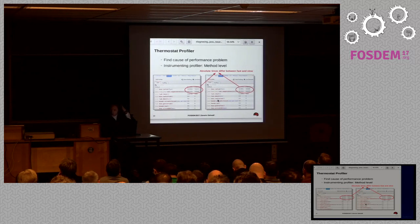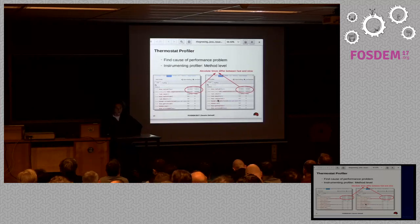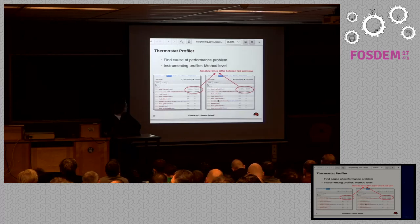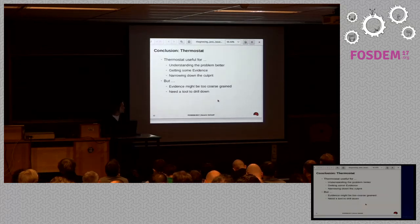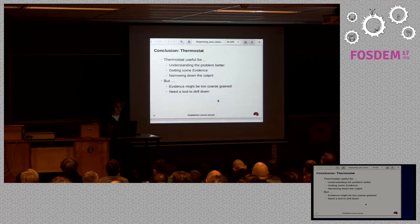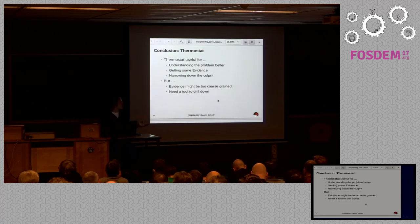Our first attempt is using Thermostat's profiler. We do two profiling sessions - to the left we see a profiling session of the fast task, and to the right we see a profiling session of the slow task. But overall it really shows only that time is spent in those two methods. We don't really know why there's a difference between the fast and the slow task. The only difference is what we already know: the absolute times differ. So to conclude, Thermostat alone can help for understanding the problem better and getting some evidence, narrowing down what might actually be causing this problem. Here we seem to have a CPU-bound problem. But when we do the profiling, we see there's no real difference between the fast and the slow task. So, what now?